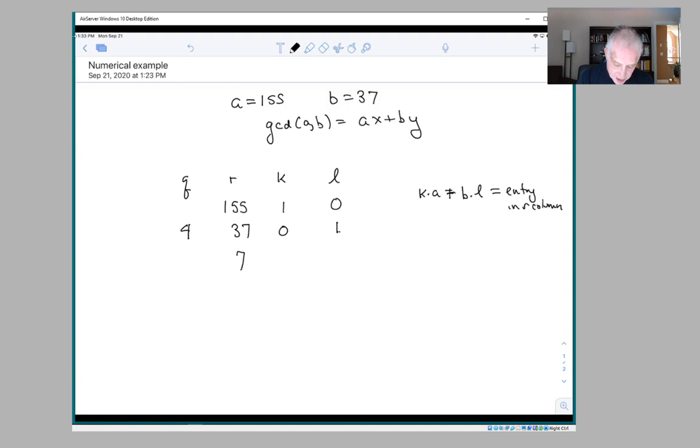So Q is the quotient of these two numbers, and then the next entry in the R column is this minus this times this, which is the remainder.